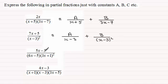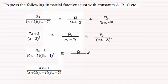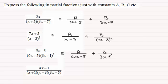For the next one, (5x-3) divided by (6x-5)(3x+1) squared, we've got one linear factor (6x-5) and a repeated linear factor (3x+1) squared. This gives rise to a constant a over the first linear factor (6x-5). Then we handle the repeated factor similarly: another constant b divided by (3x+1), and then another constant c divided by (3x+1) all squared.